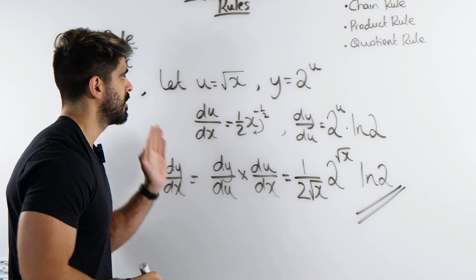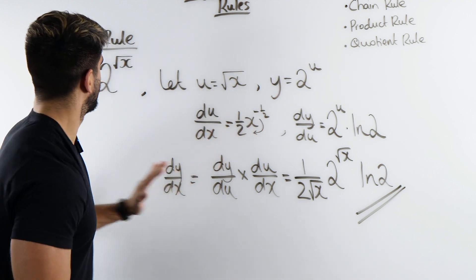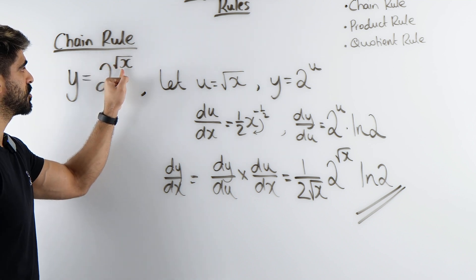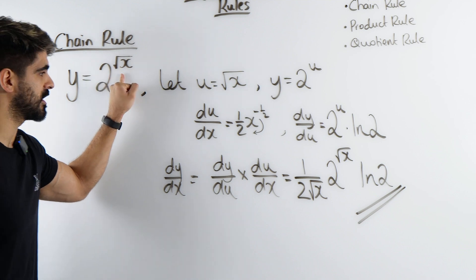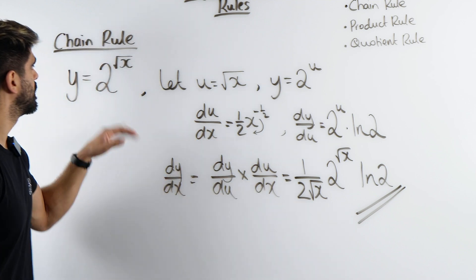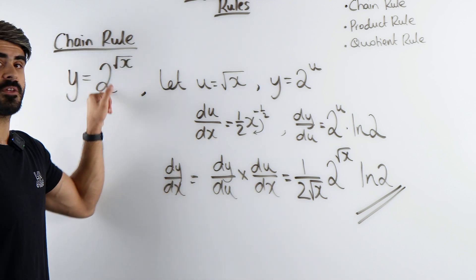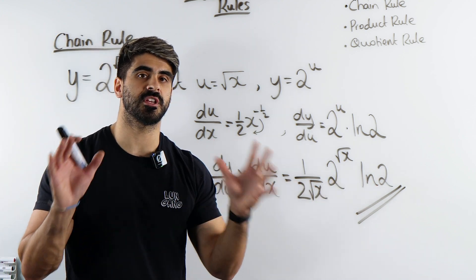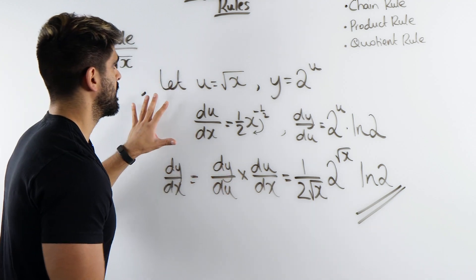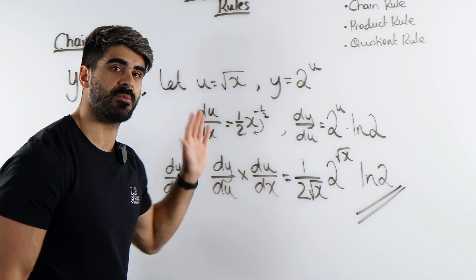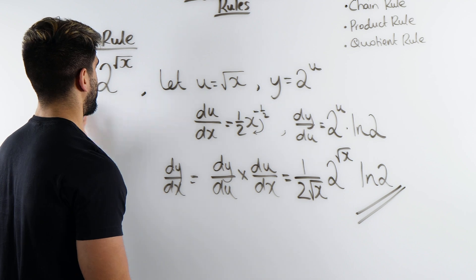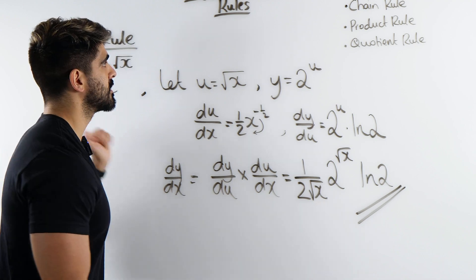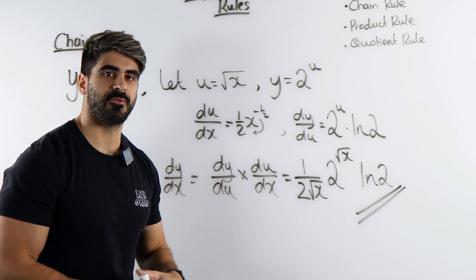This is something you could have done without going through all of that. All you're doing is saying: differentiate the power first, and 2 to the power of whatever differentiates to itself times ln(2). So you could get the answer straight away. At the beginning it's important you understand what's going on so you can keep applying the quick process. Alright, so that's the chain rule. Let's take a look at the product rule.